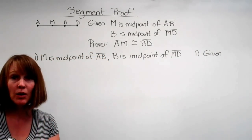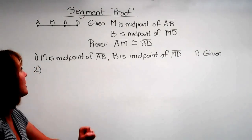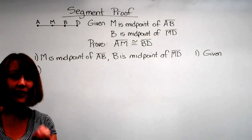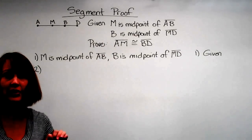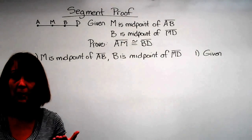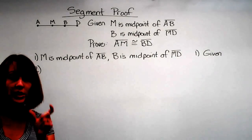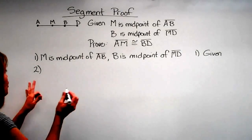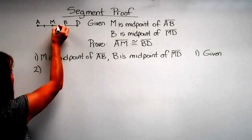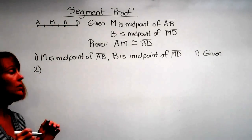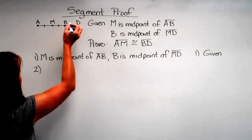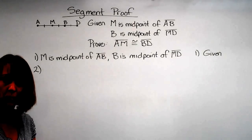Now the key is to look at the keywords. What did they give us? They gave us midpoint. So now we can use the definition of midpoint because that's what they gave us. What is the definition of midpoint? It divides up that segment into two equal segments. So that means I can jump right here: AM is equal to MB, and I can say that MB is equal to BD. That was our definition of a midpoint.